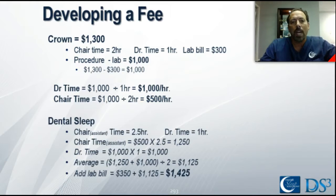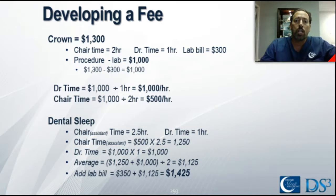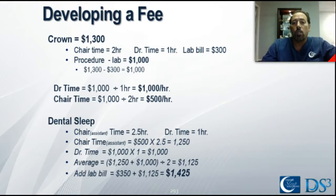We can just reverse this for dental sleep. You'll have to figure out what length of time it takes you to do these procedures, but these are very conservative numbers, especially using the DS3 system. It takes us less than two and a half hours of chair time from start to finish for most cases, and less than one hour of my personal time. If you take longer, put in longer amounts of time. Looking at chair time, that's $500 times two and a half hours, or $1,250. Looking at doctor time, it's one hour, so that's $1,000.